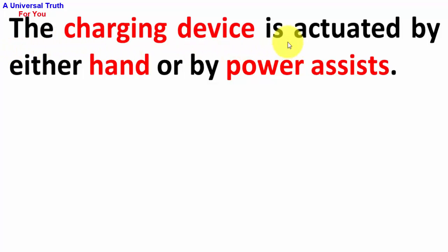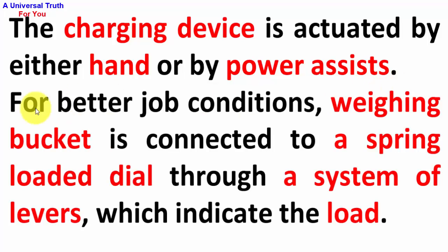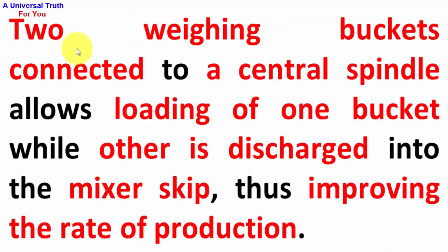The charging device is actuated by either hand or by power assists for better job conditions. A weighing bucket is connected to a spring-loaded dial through a system of levers which indicates the load. Two weighing buckets connected to a central spindle allow loading of one bucket while the other is discharged into the mixer skip, thus improving the rate of production.